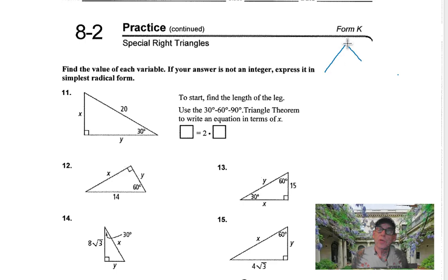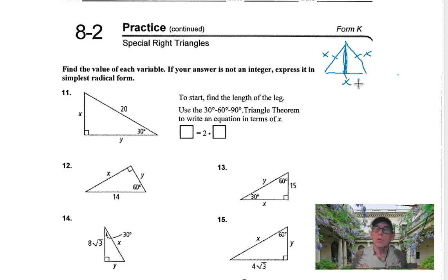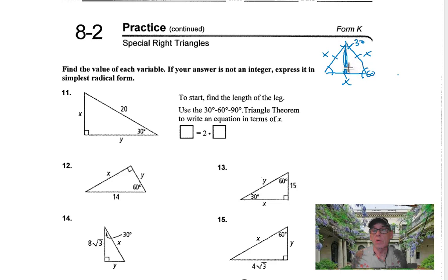To set this up, let's pretend that we have an equilateral triangle. All these side lengths are the same — let's call them all X. Now let's imagine we have an altitude in this equilateral triangle. Since it's equilateral, it's also equiangular, which means the angles are 60 degrees. Let's look at the angles.